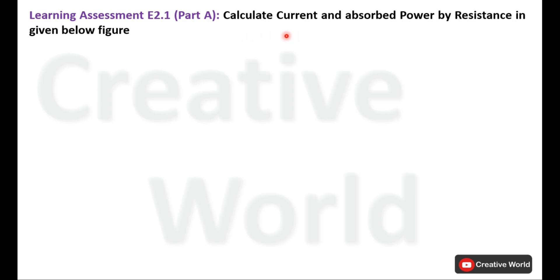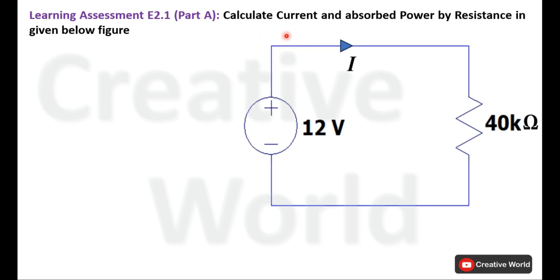Read the scenario — Learning Assessment 2.1, Part A: calculate the current and absorbed power by the resistance in the given figure. We have to calculate current I and the power absorbed by this resistance, so without wasting time let's proceed towards the solution.